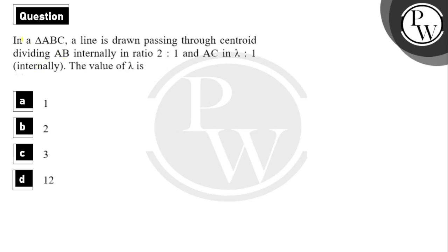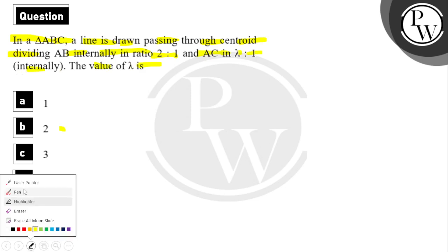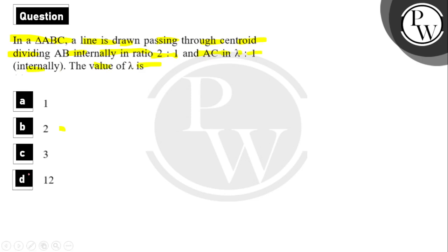Let's read the question. In triangle ABC, a line passing through the centroid divides AB internally in the ratio 2:1 and AC in ratio λ:1 internally. The value of λ is to be found from the given 4 options. We need to find the value of lambda.